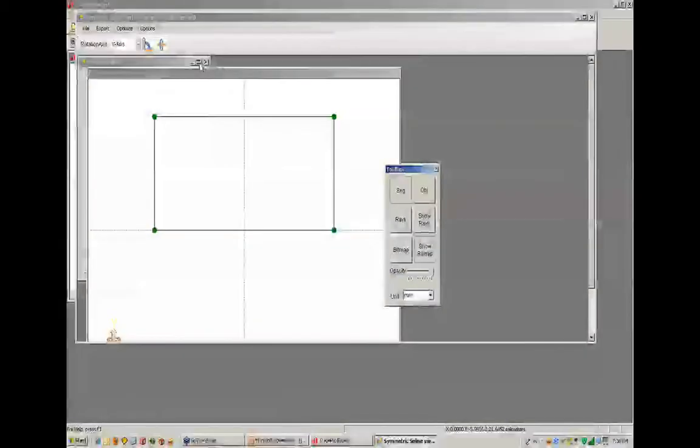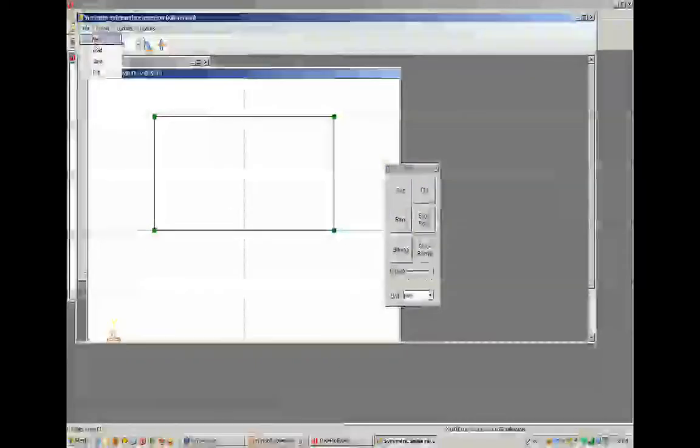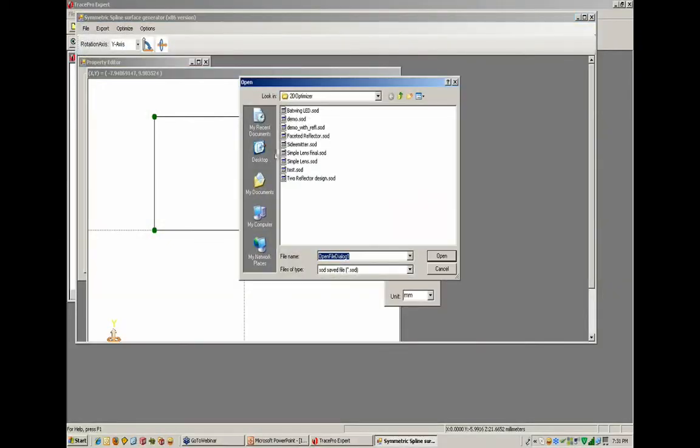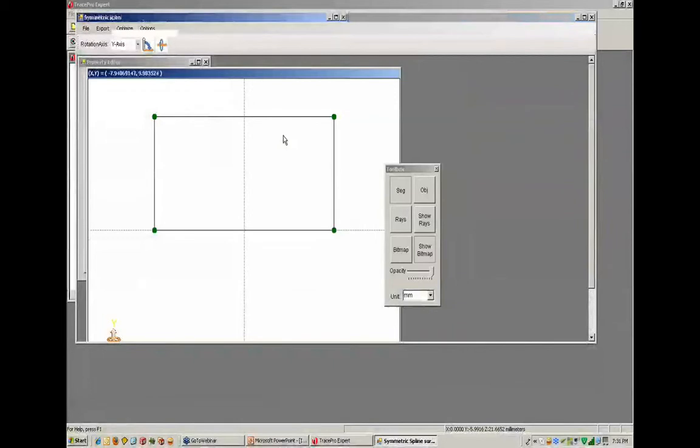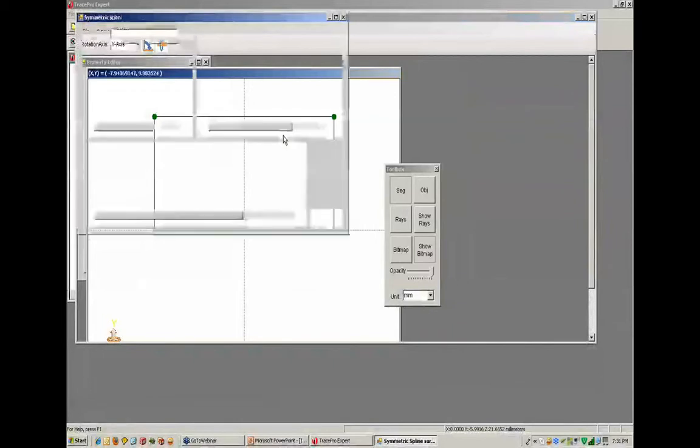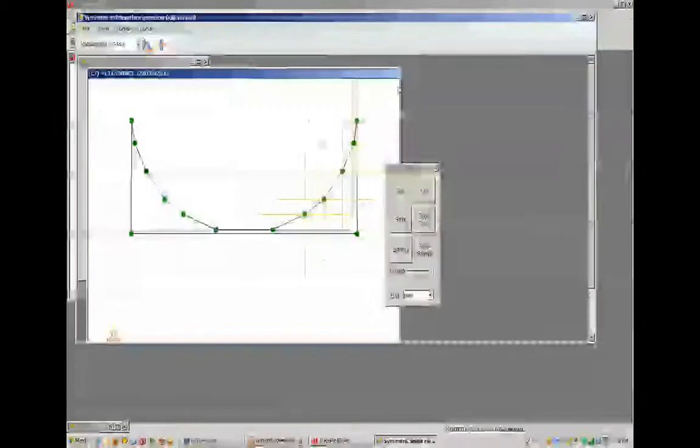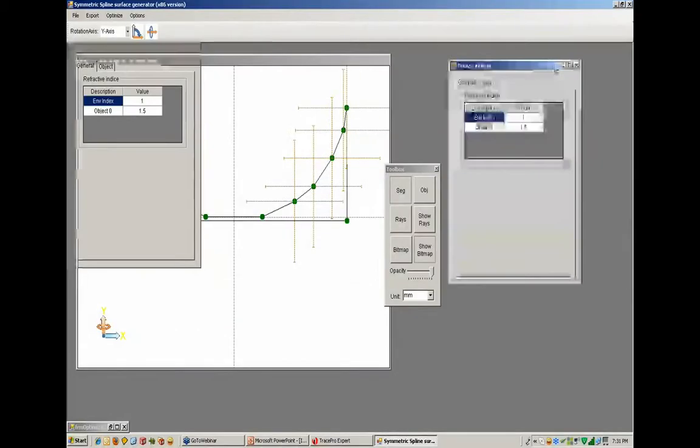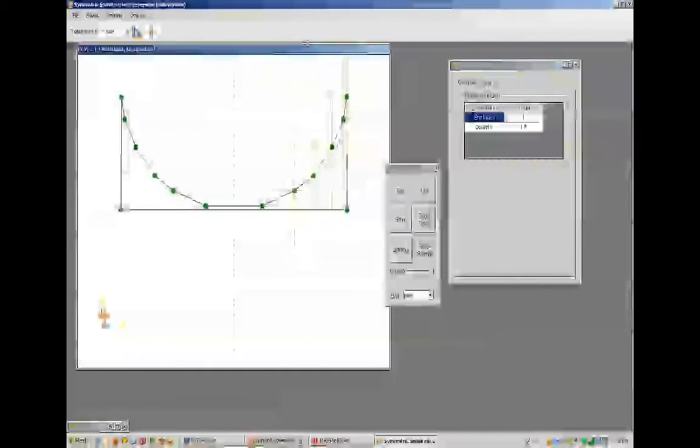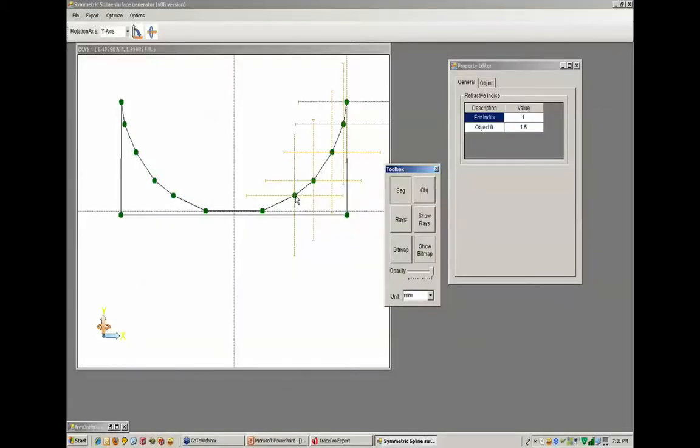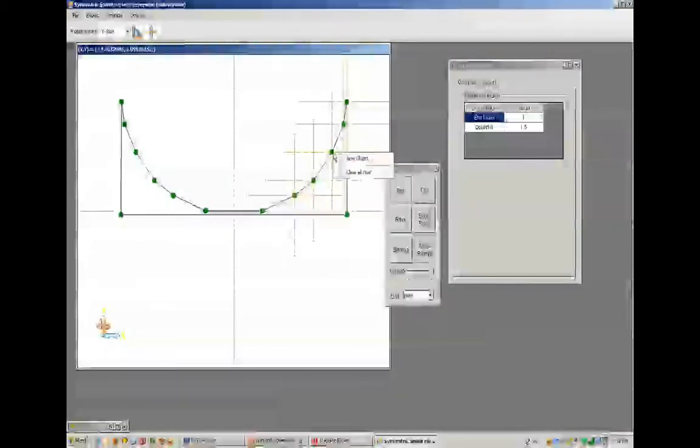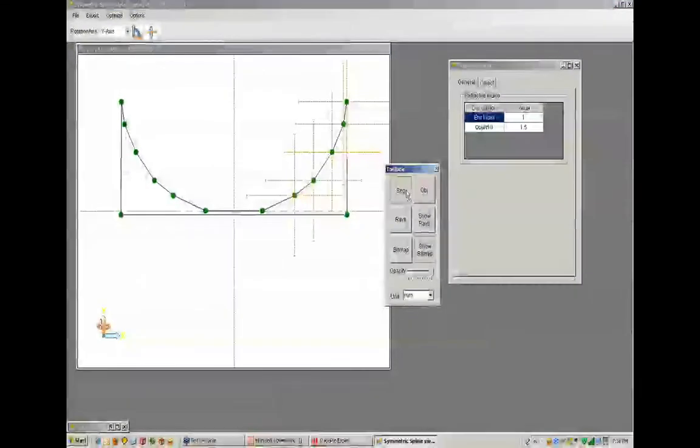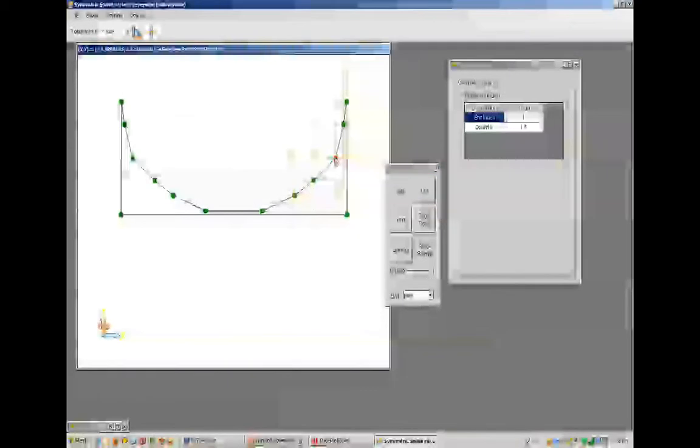So first of all, what I'd like to show you is that I'm going to load in a faceted reflector. This is something that I've created before, and you can see it looks exactly like what we were playing with in the webinar. And I can grab, after I grab the segment tool here, I can grab on any of these little green control points and change them.